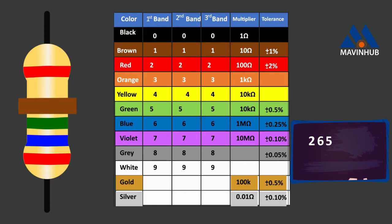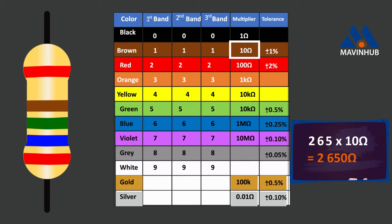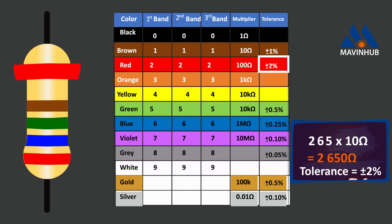The fourth band is the multiplier, which is brown. Brown represents 10 ohms, so we multiply the first three digits by 10 ohms. 265 times 10 ohms equals 2650 ohms. Therefore, the value of this resistor is 2650 ohms with a tolerance of plus or minus 2 percent.